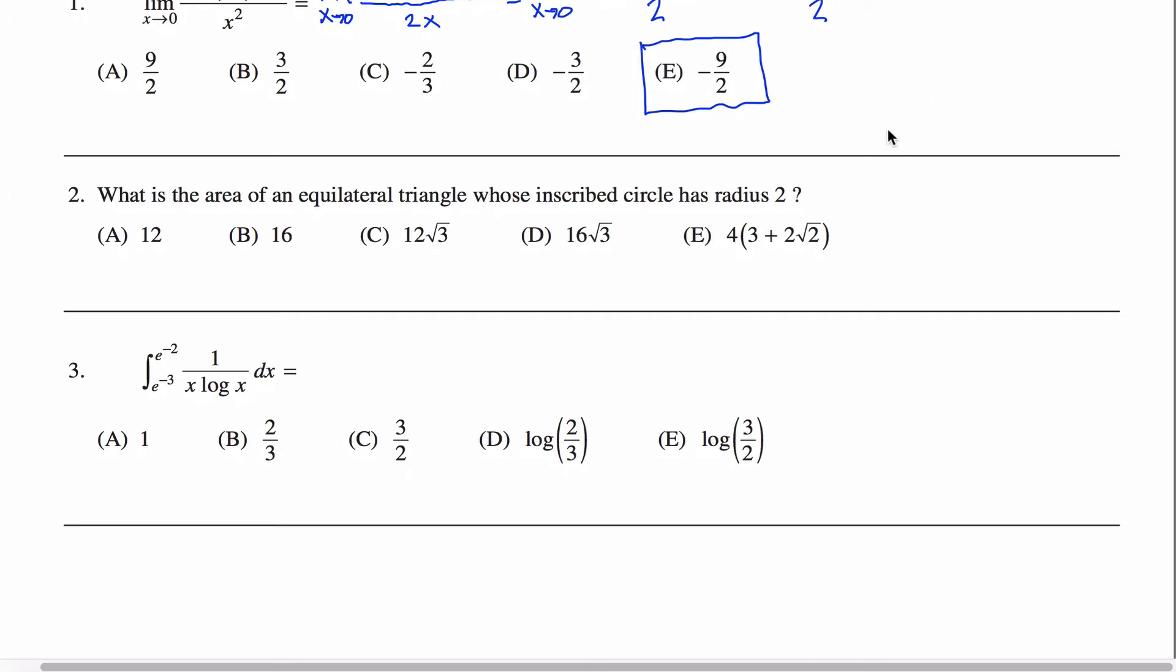I'm visual. I like to have pictures of all this stuff. So here is a more or less equilateral triangle with a more or less inscribed circle with radius of two. What you're trying to do is figure out what is the area of this triangle.